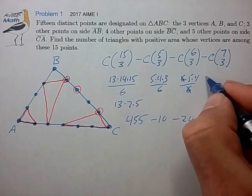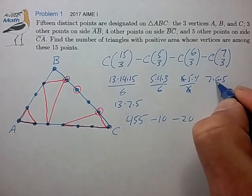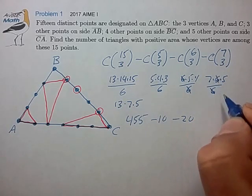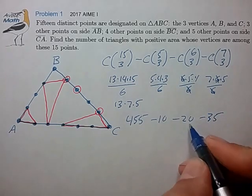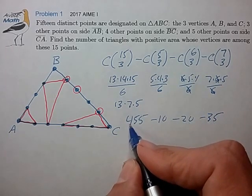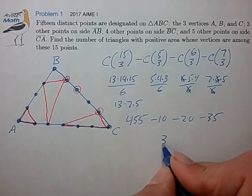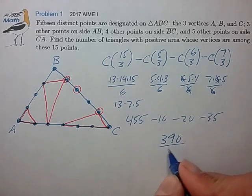C(7,3), 7 times 6 times 5 divided by 6, that's 35. So that's 455 minus 10 minus 20 minus 35, which is 390. Final answer. Hope that helps, and we'll see you at the next video. Bye-bye.